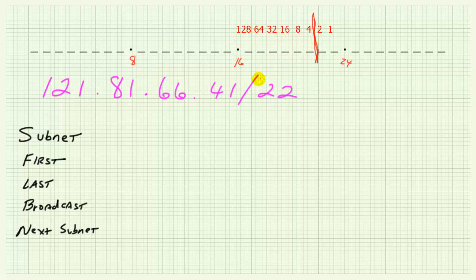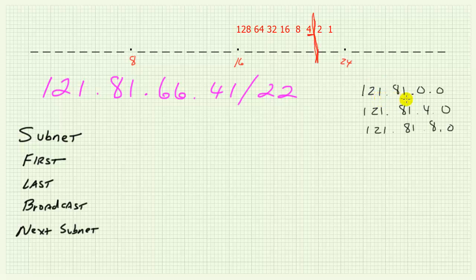To figure out where the current subnet is, we need to know the interval or increment by which our subnets increase. As we learned in prior videos, the subnet increment is the bit weight of the least significant subnetwork bit position, which in this case is right there — the bit position to the left of the dividing line, which carries a bit weight of four. This tells us our subnetworks increment by four. So we'd have 121.81.0.0, then 121.81.4.0, then 121.81.8.0, and so on.